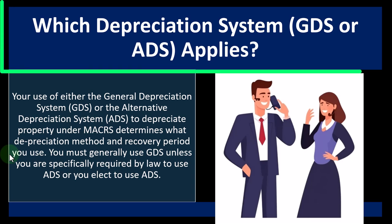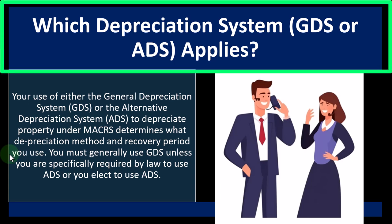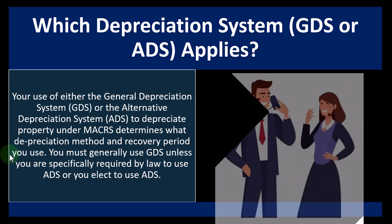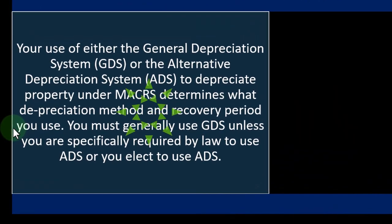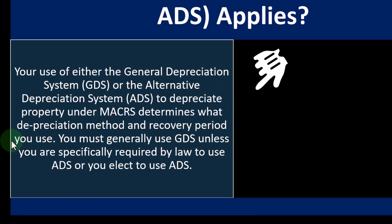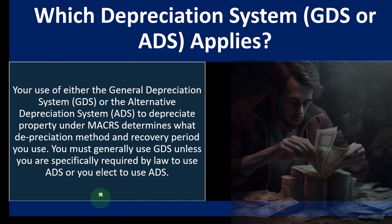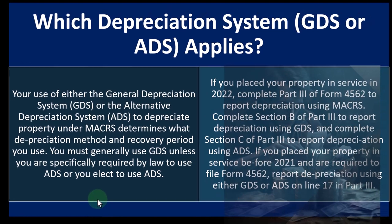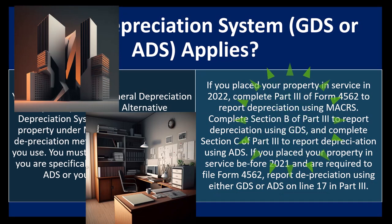Which depreciation system — GDS or ADS — applies? You must generally use GDS unless you are specifically required by law to use ADS or you elect to use ADS. The default is the General Depreciation System. If you place property in service in 2022, complete Part 3 of Form 4562 to report depreciation using MACRS — Section B of Part 3 for GDS, and Section C of Part 3 for ADS. If property was placed in service before 2021, report depreciation on line 17 of Part 3.